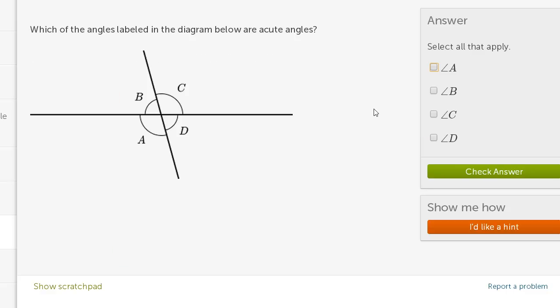Which of the angles labeled in the diagram below are acute angles? So just as a reminder, an acute angle is less than 90 degrees. So let's see. A and C both look larger than 90 degrees, but B and D both look less than 90 degrees.